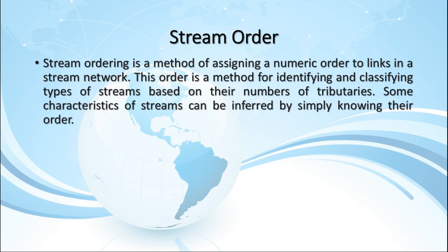Stream ordering is a method of assigning a numeric order to links in the stream network. This order is a method for identifying and classifying types of streams based on their numbers of tributaries. Some characteristics of streams can be inferred by simply knowing their order.